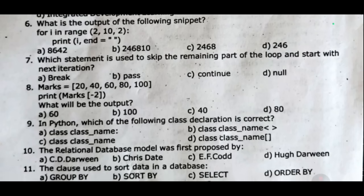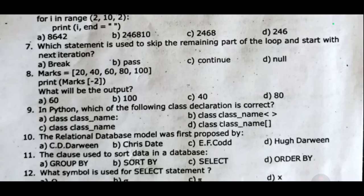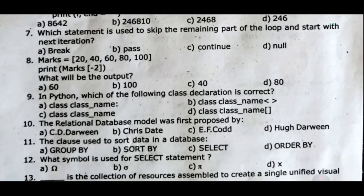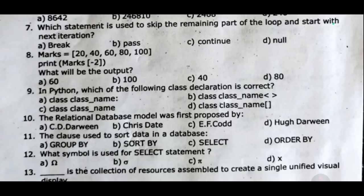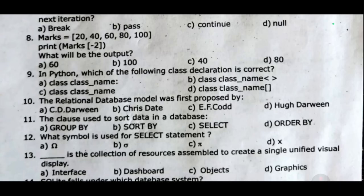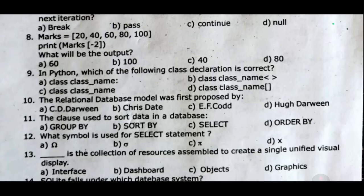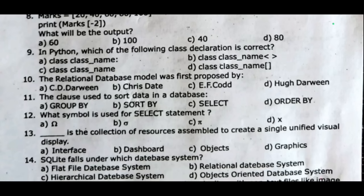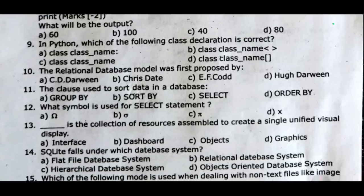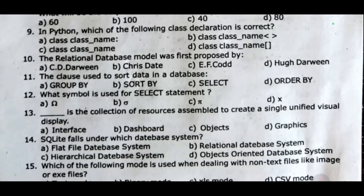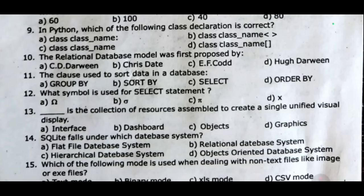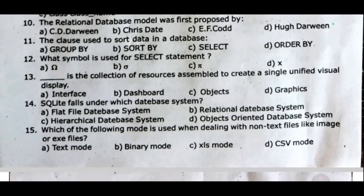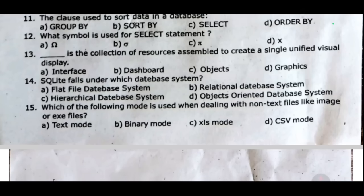Question 10: The relational database model was first proposed by dash. Question 11: The class used to sort data in a database — dash. Question 12: What symbol is used for the select statement? Question 13: Dash is the collection of resources assembled to create a single unified visual display. Question 14: SQLite falls under which database system? Question 15: Which of the following modes is used when dealing with non-text files like image or exe files?